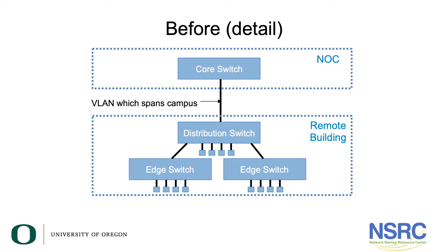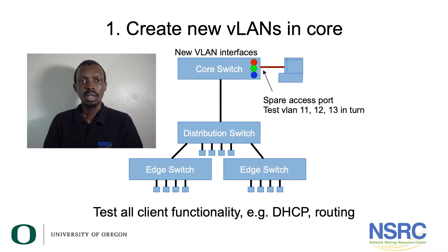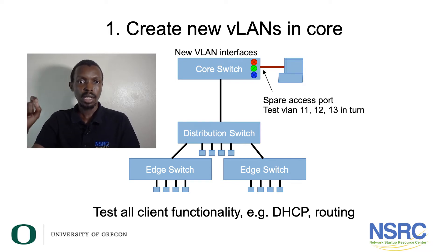Before the migration: you have the core switch inside the NOC, and on the remote building you have the distribution switch — possibly with some end nodes — and then edge switches each with end nodes. There is a single VLAN which spans the entire campus; it might even be VLAN 1, the default VLAN, if no VLAN has been specified.